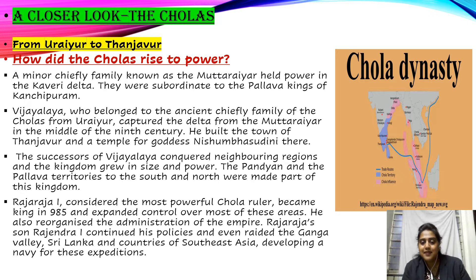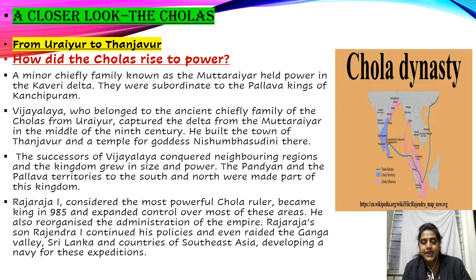Rajendra I even raided the Ganga Valley, Sri Lanka, and countries of Southeast Asia, developing a navy for these expeditions. This is how the Cholas came into power slowly and gradually.